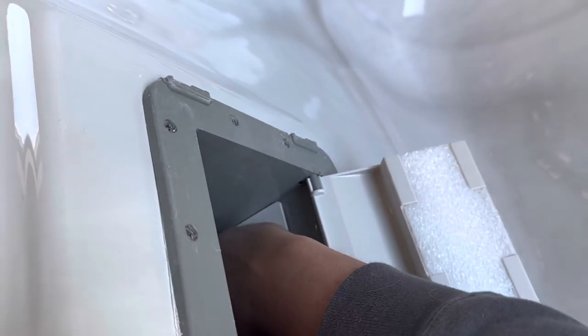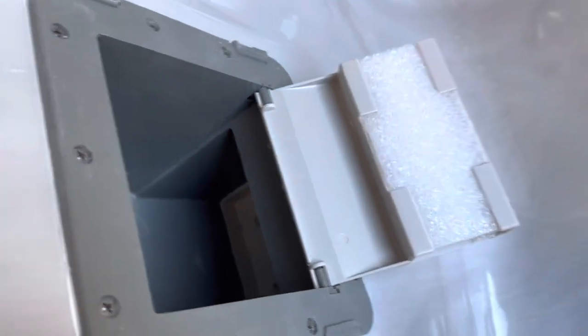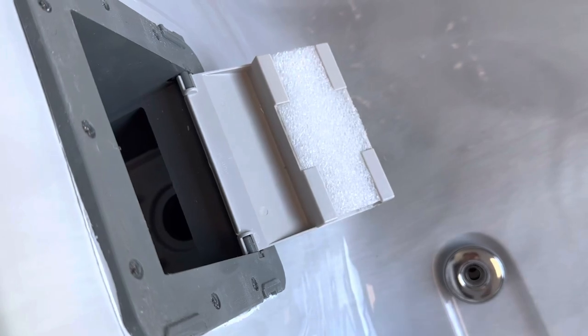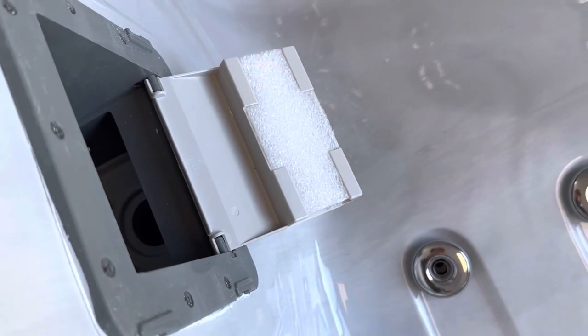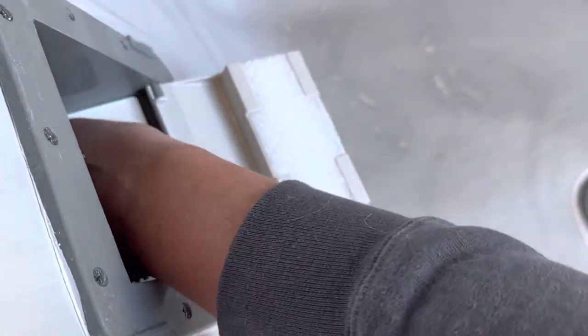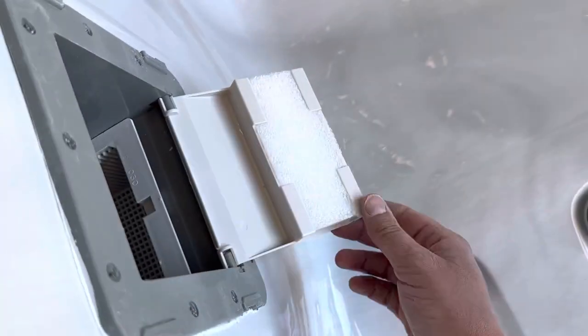Also when you're draining your tub, if you're using the self-clean function, you want to be able to take that out so you can put your skimmer plug in there so that when you're draining the tub using the self-clean pump, then it won't be sucking air through that hole. So that's a really important step if you're using the self-clean system to drain your tub.